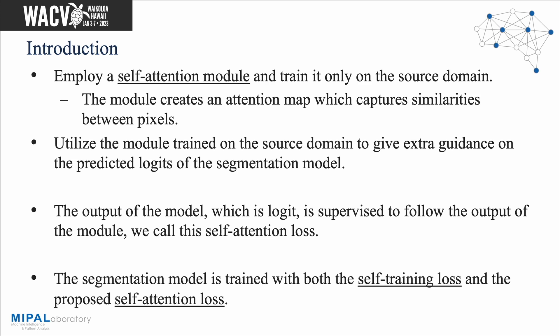Specifically, we employ a self-attention model to give extra guidance on the output of the segmentation model. The self-attention model is trained only on the source domain data to capture pixel correlations. After the model is fully trained on the source domain, we utilize it to conduct the actual domain adaptation. The output of the segmentation model is supervised to follow the output of the module, which we call the self-attention loss. We expect the segmentation model to learn domain invariant knowledge by following the output of the self-attention model, trained with both the self-training loss and the proposed self-attention loss.